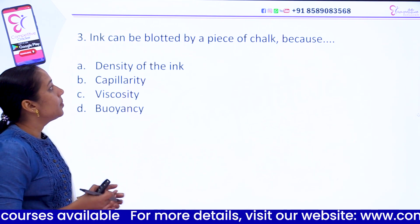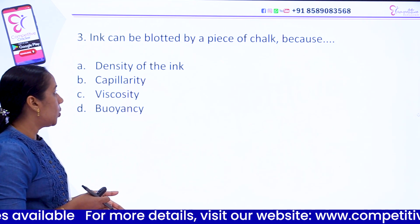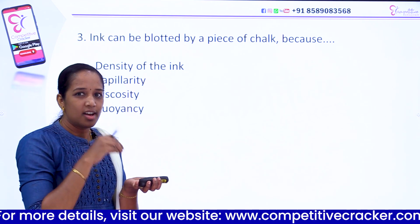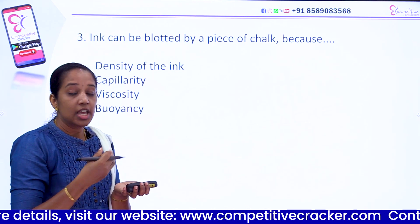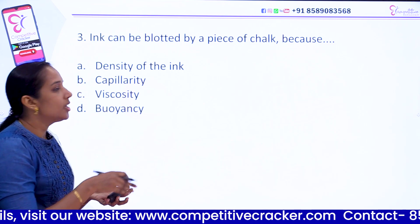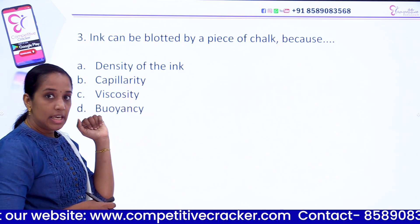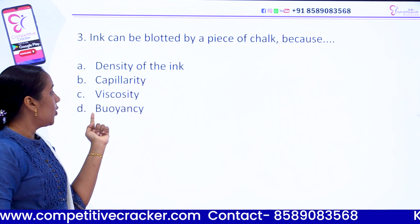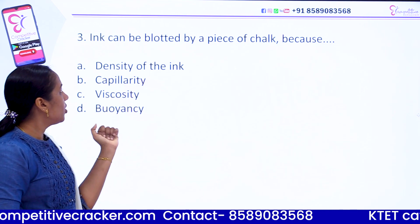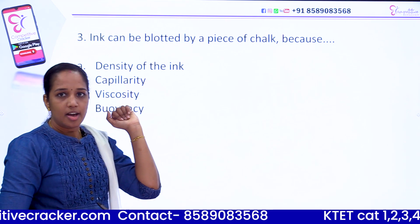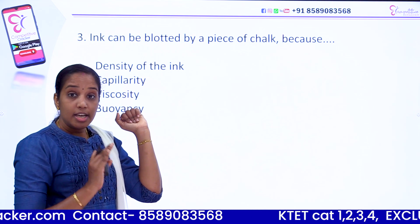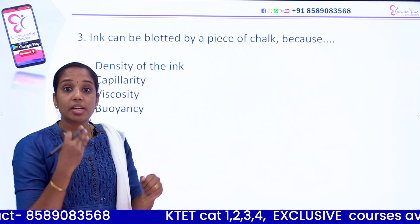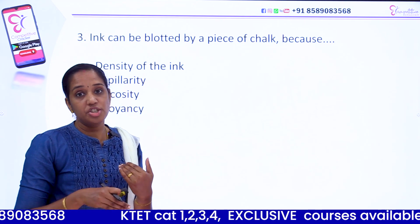Question number 3. Ink can be blotted by a piece of chalk. Why? The options are: density of the ink, capillarity, viscosity, and buoyancy. Density of ink is not the reason. The correct answer is capillarity.